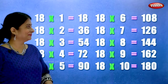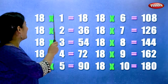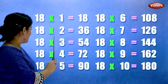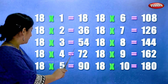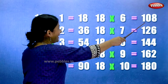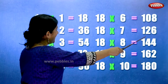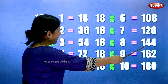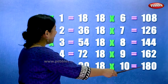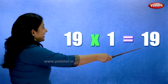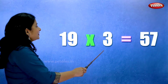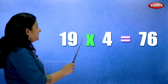18 ones are 18. 18 twos are 36. 18 threes are 54. 18 fours are 72. 18 fives are 90. 18 sixes are 108. 18 sevens are 126. 18 eights are 144. 18 nines are 162. 18 tens are 180.